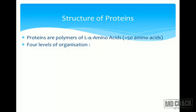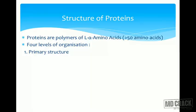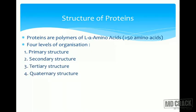These proteins have different levels of organization. Just as an alphabet can form a word, words can form sentences, and sentences can form chapters, similarly in proteins we have four levels of organization: the primary structure, the secondary structure, the tertiary structure, and the quaternary structure. We'll start with the primary structure.